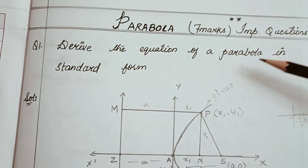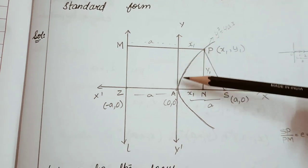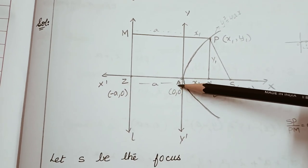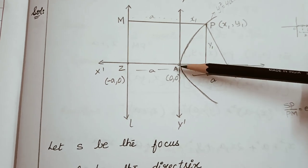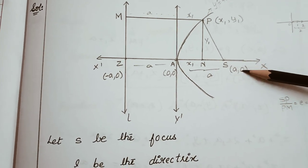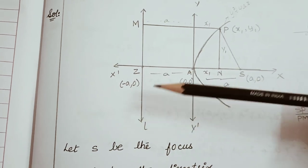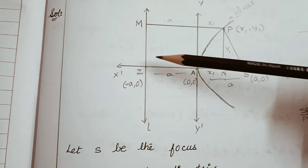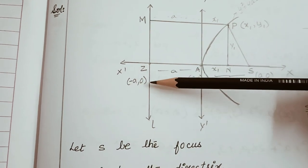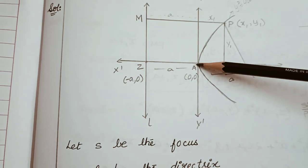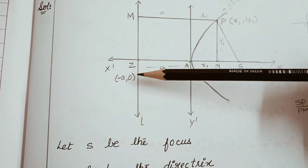We will derive the equation of a parabola in standard form. In this diagram, this line is the x-axis, this is the y-axis, and the origin is denoted by A, that is (0,0). S is the focus at point (a,0), because the distance from the origin to S is a. On the directrix, the distance from A to S and A to Z are both equal to a. Point Z is at (-a,0) because on the left side the x-axis is negative.